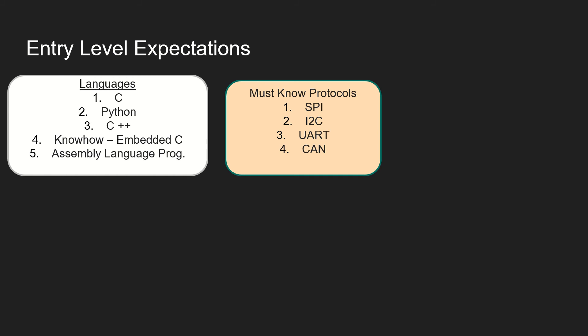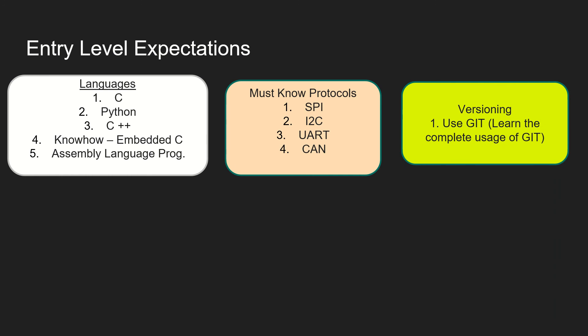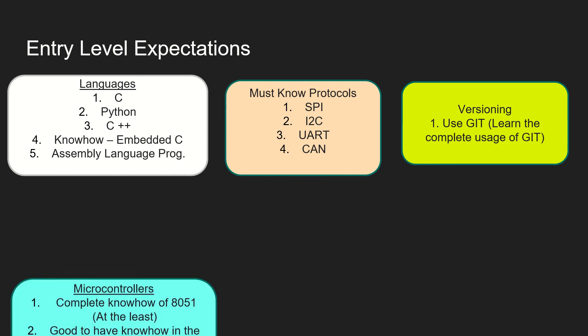There are some protocols you need to definitely know at entry level: SPI, I2C, CAN, UART — these are the most important four. If you know other protocols, make sure you recollect the clear structure of those protocols and know where and how they are used. Versioning is also very important — writing code, committing it, the commit and pull operations, these are very important to understand. Please know versioning clearly and learn the usage of Git, because everybody expects that you must know Git.